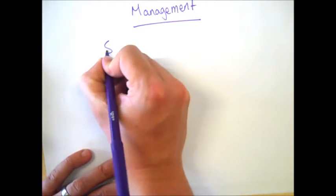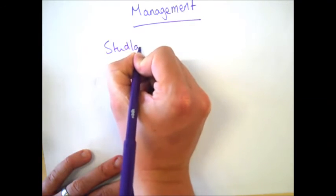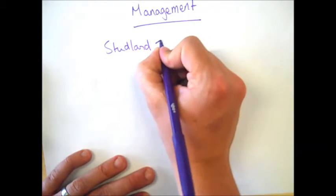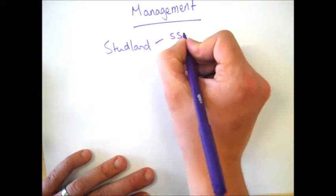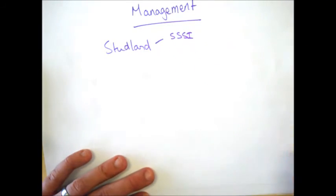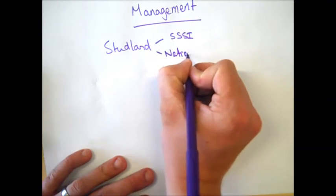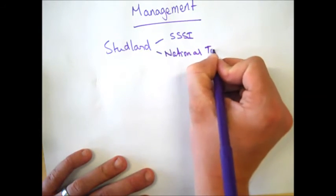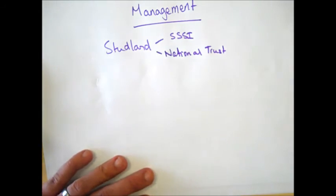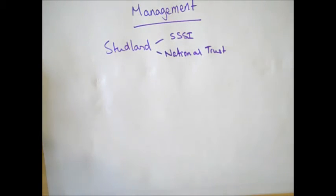When we look at Studland Bay, we need to remember two things. Firstly, it's a site of specific scientific interest, or an SSSI. That means it is protected by law for scientific purposes and conservation. On top of that, it's owned by the National Trust. So again, they can put in bylaws to protect the area. These are normally enforced by park rangers.